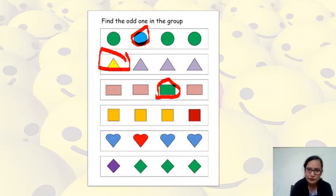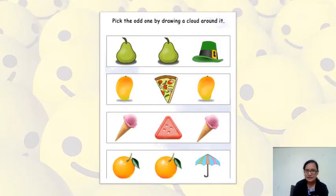Now we will move to our next slide. In this slide, we have two pears and one hat. Pear is a fruit and hat is not a fruit. So we are going to circle this.